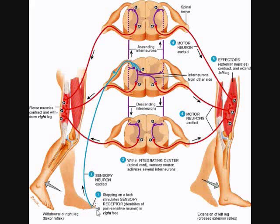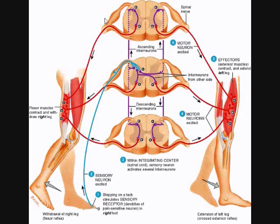Let's start with the sensory stimulus. The tack stimulates the nociceptors on the right foot, and that generates a nerve impulse in the sensory neuron. The sensory neuron nerve impulse travels along this blue line — that's the sensory neuron — into the spinal nerve, through the dorsal root ganglion, into the dorsal root of the spinal nerve, and into the dorsal horn of gray matter. We saw already with the flexor or withdrawal reflex that it then synapsed with interneurons — one that came out the same section through the ventral horn of gray matter, out the ventral horn of the spinal cord, out the spinal cord. Other synapses ascended or descended to separate segments of the spinal cord so they can continue to stimulate the whole muscle group.